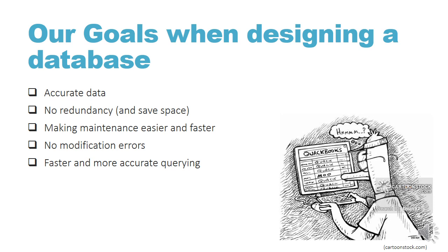Our goals when designing a database are: we've got to have accurate data. Data has got to be reliable, and there are things you can do to make sure this happens. There must be no redundancy — if you copy data again and again all over the database, you're going to waste a lot of space, and remember that a lot of databases have millions of records. Our database must be designed so that maintenance is easier and faster. We must not get modification errors when we modify data in one place — it should not cause problems somewhere else. And querying should be faster and more accurate because of a good design.